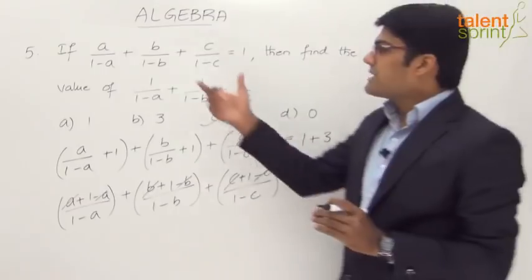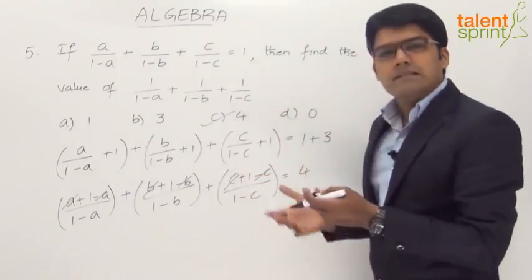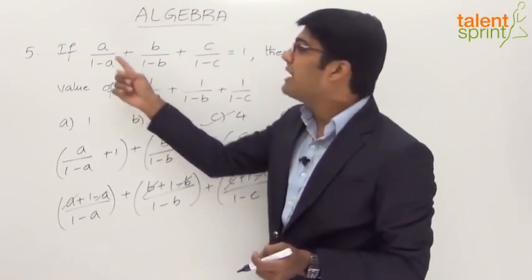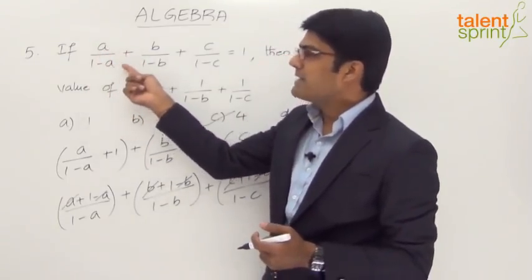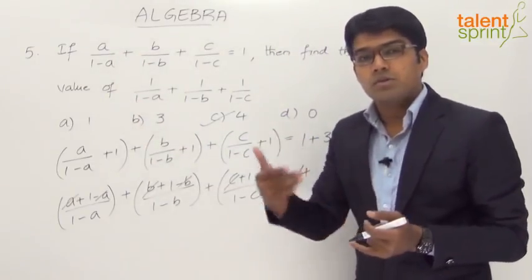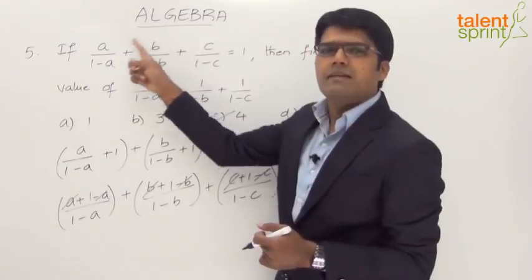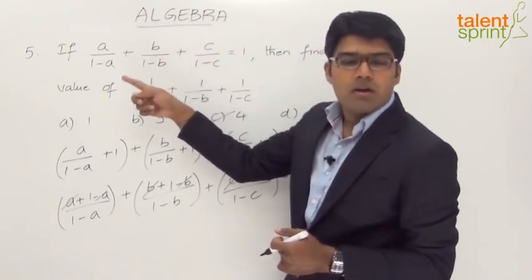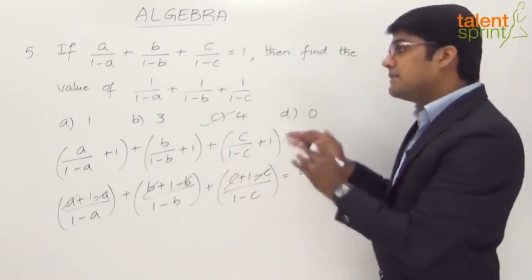The whole idea is to express the given equation in the form of what is required. Looking at the term a/(1−a) compared to 1/(1−a), we need to eliminate a from the numerator. If we add the denominator (1−a) to the numerator a, then a and −a cancel, giving 1/(1−a). This is essentially the componendo method applied to each term. Since we add 1 to each of the three terms on the left, we must add 3 to the right side to keep the equation balanced.